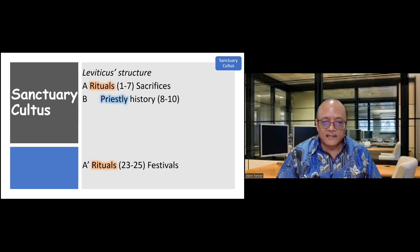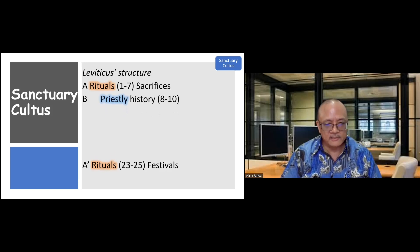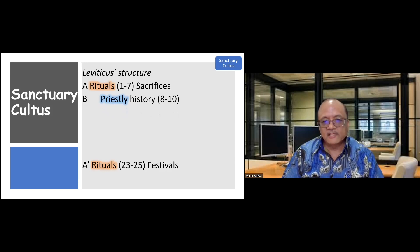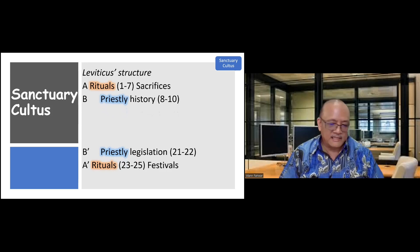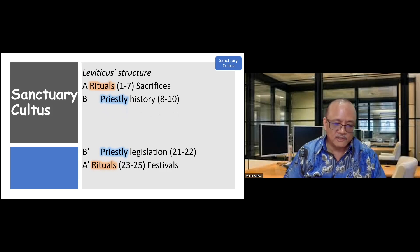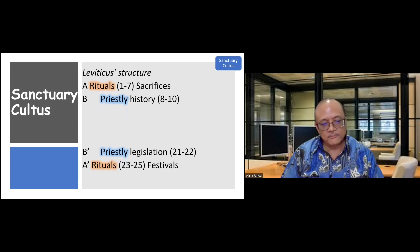In the next set of parallels, we have some priestly material. First, we have priestly history in chapters 8 to 10, and then some priestly legislation in chapters 21 to 22.